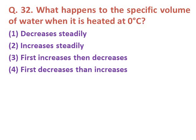Question thirty-two: What happens to the specific volume of water when it is heated at 0°C? Option one: decreases steadily. Option two: increases steadily. Option three: first increases then decreases. Option four: first decreases then increases. The correct answer is option four — the specific volume of water first decreases then increases when heated at 0°C.